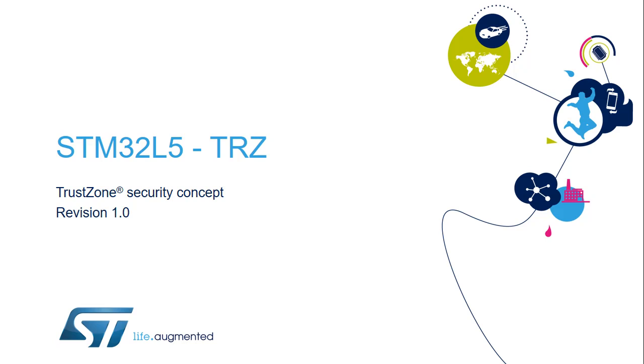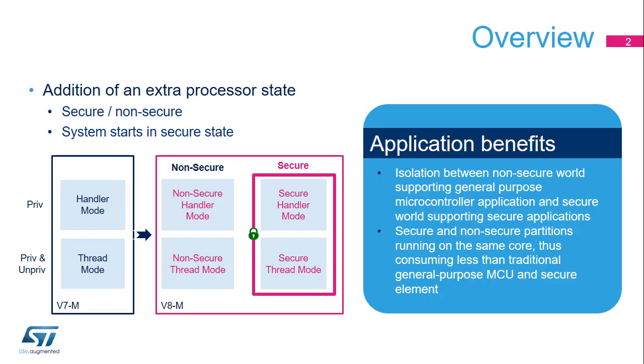TZEN can only be set when readout protection level is 0. The ARMv8-M architecture implements TrustZone for Cortex-M cores.